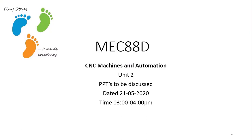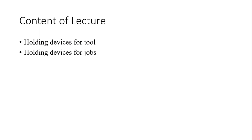Hello friends. This lecture is in continuation with your previous lecture series of CNC Machines and Automachines. We have started unit number 2, and I hope you have studied well about the previous lectures. Today we are going to discuss the two major issues of CNC Machines: holding devices for tools and holding devices for jobs.